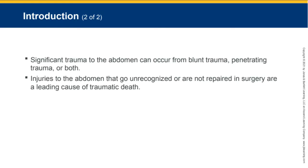Significant trauma to the abdomen can occur from blunt trauma, penetrating trauma, or both. Once you recognize the organs in that space and how they function, you can have an idea of what injuries can occur and how you're going to treat them. Injuries to the abdomen that go unrecognized and are not repaired in surgery are a leading cause of traumatic death. With tunnel vision, you can overlook underlying injuries, and that's not going to go well for your patients.